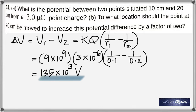In part B, to what location should the point at 20 centimeters be moved to increase this potential difference by a factor of 2? In place of having this, you want to double it. The question is, in order to double this, what should you do to this number? What should you make it to get this to be doubled?